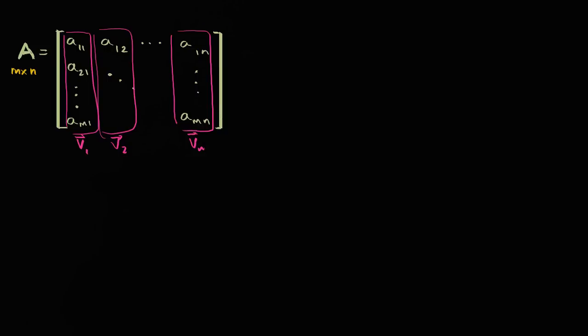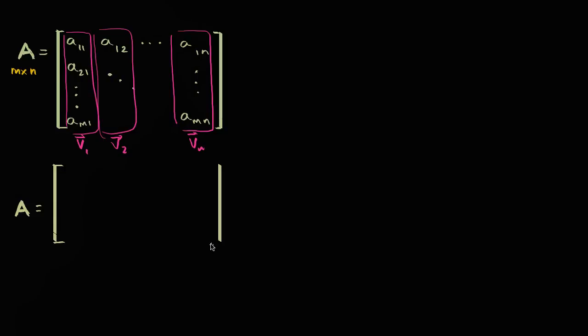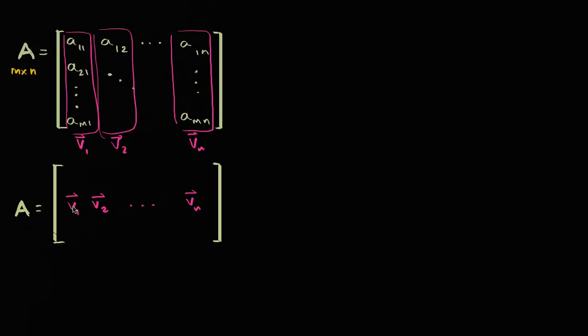We could rewrite the M by N matrix A in terms of its column vectors. So we could express A as the columns V1, V2, all the way to Vn. And remember, each of these column vectors is going to have M components — these are M-dimensional column vectors.